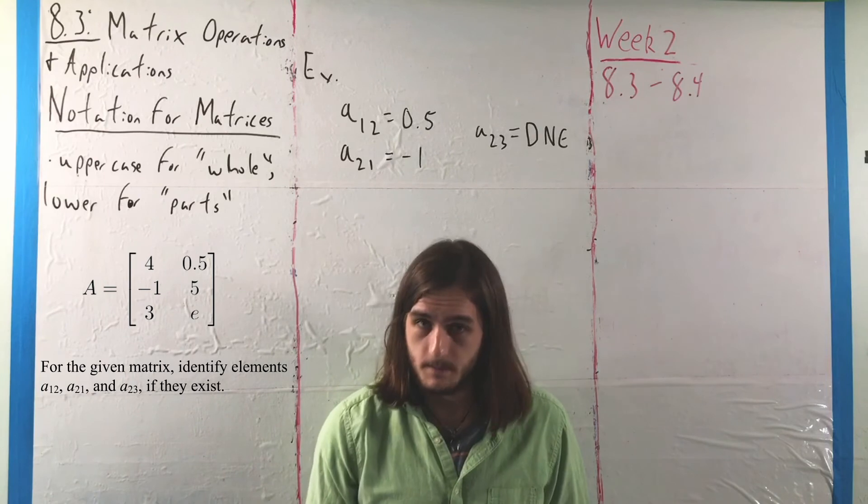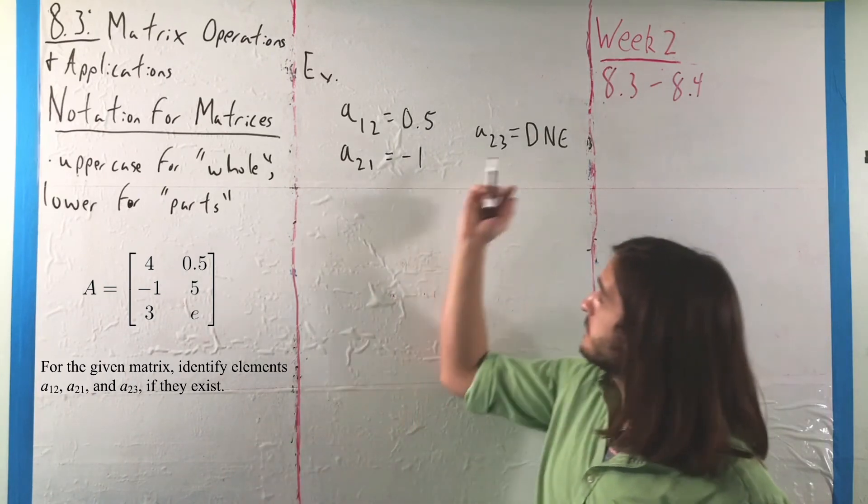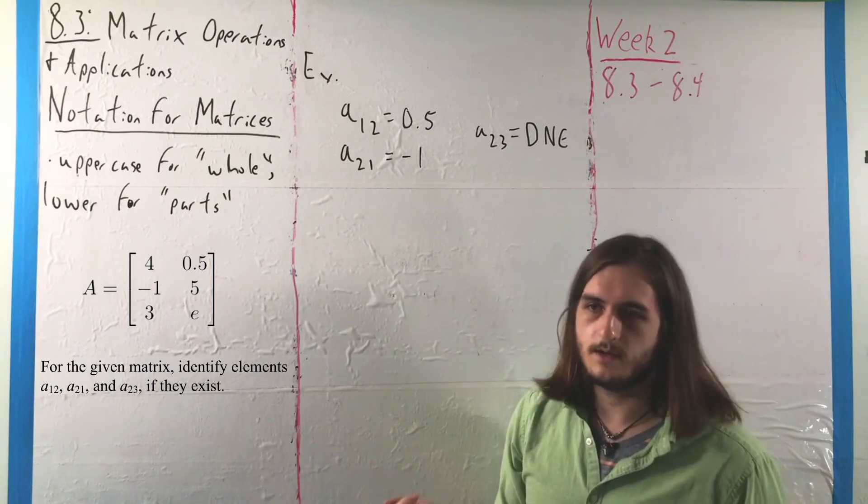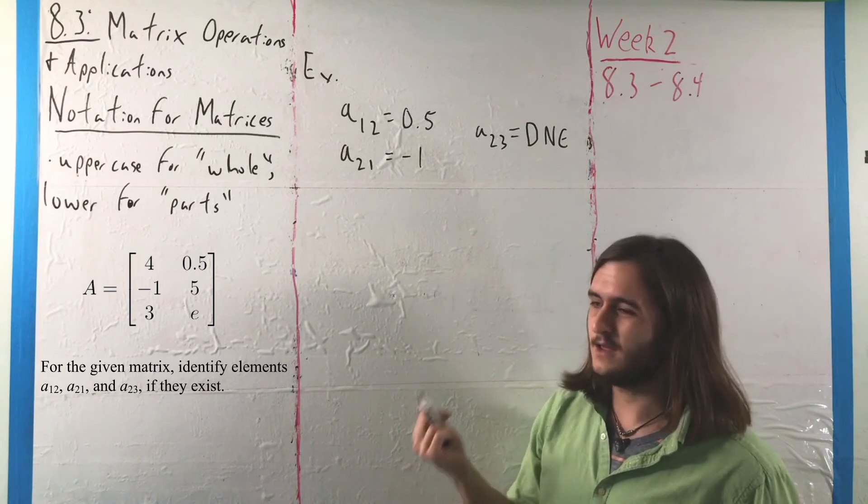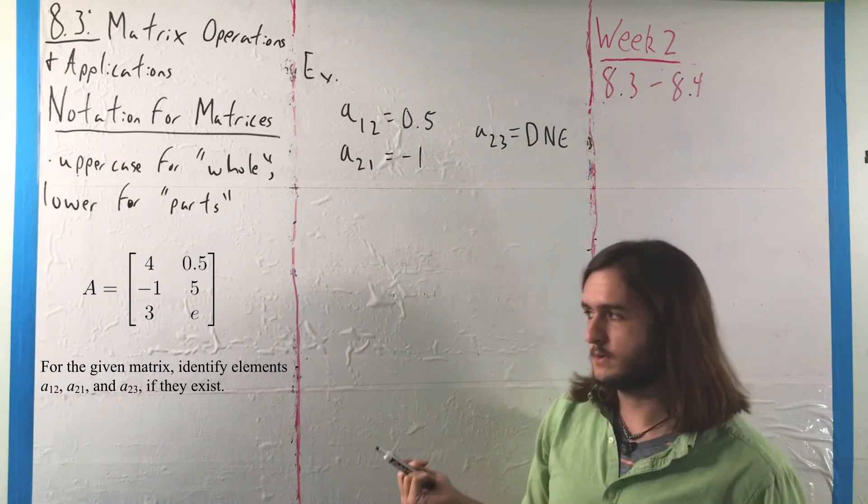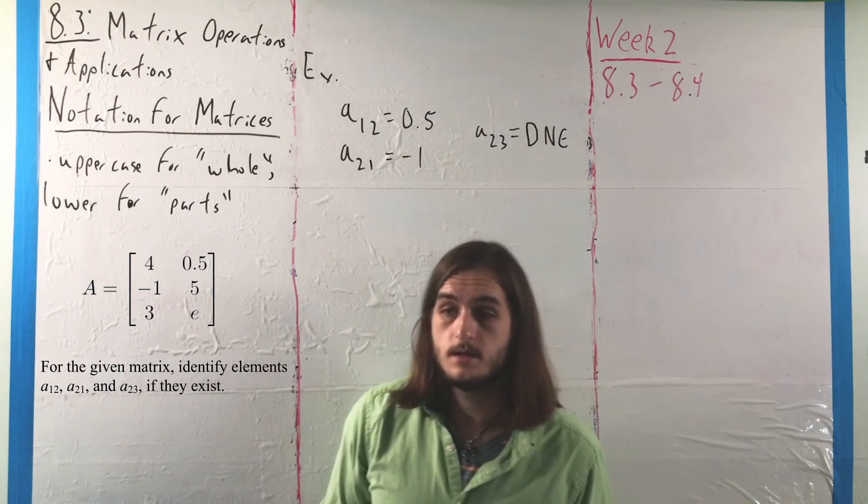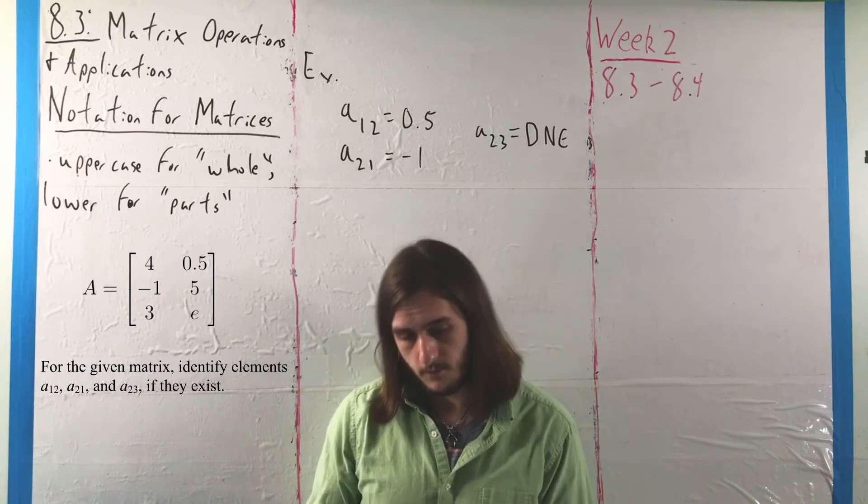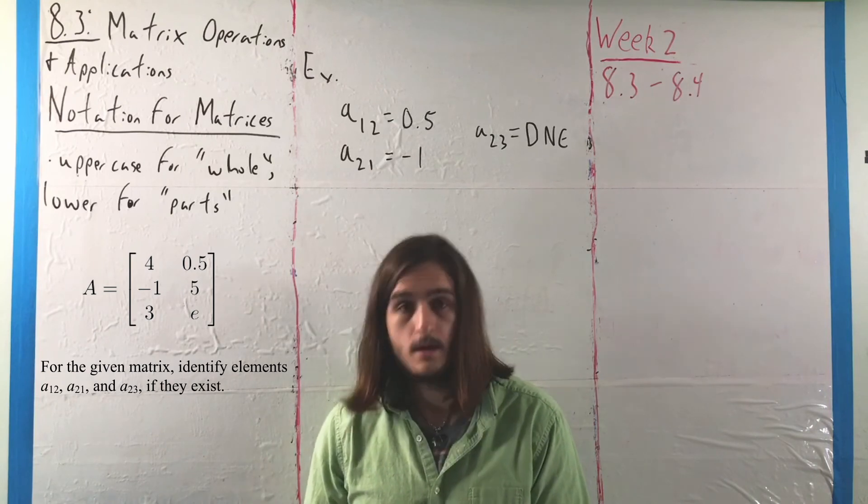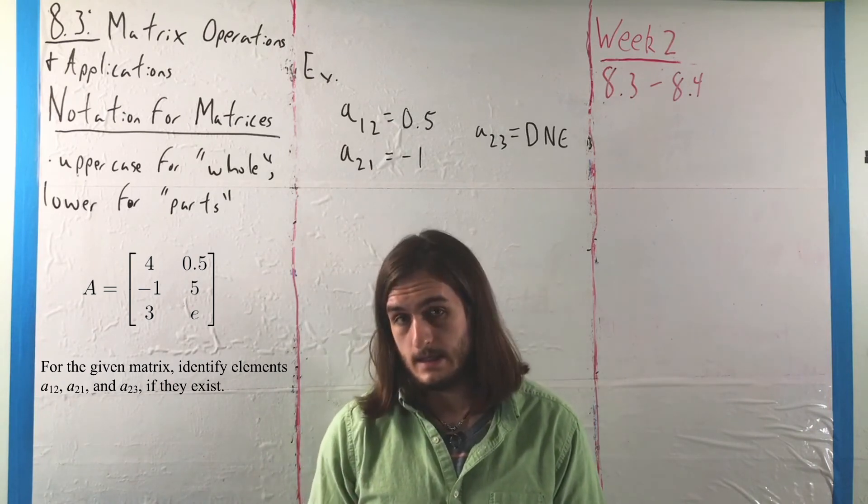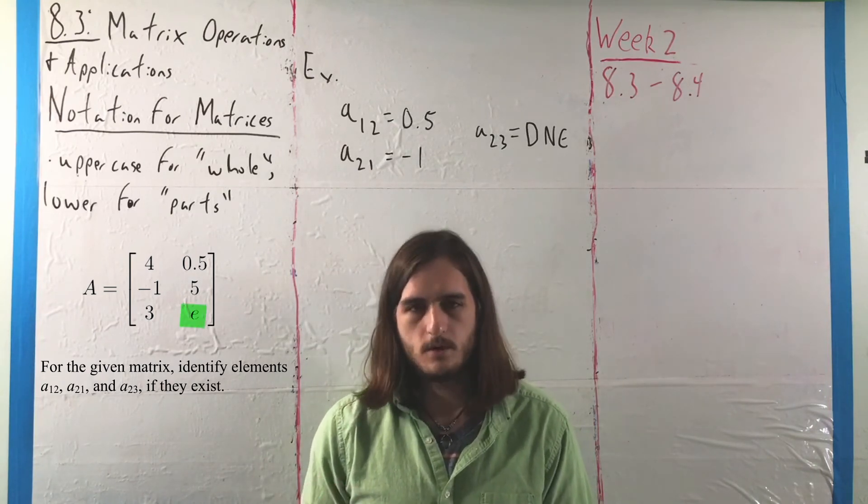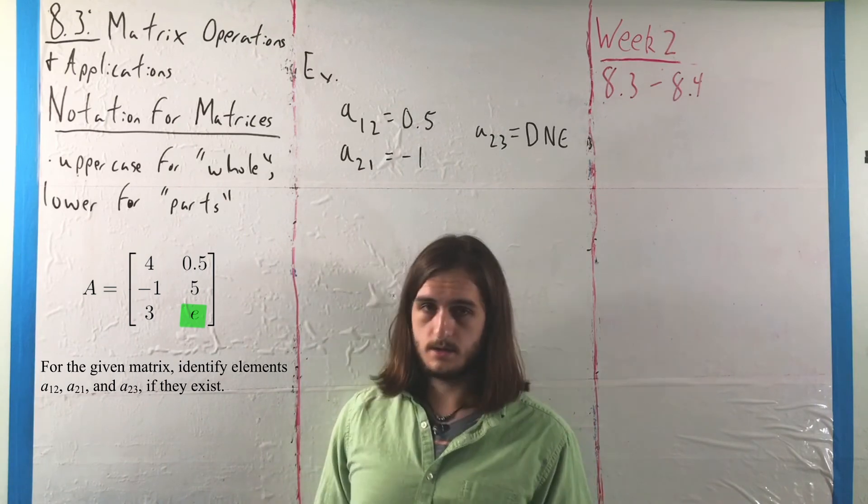Just to clarify, if you flip these - if you looked for a32 instead - that would mean the third row and second column. That would be the number E, Euler's number, which we may see later in the semester.